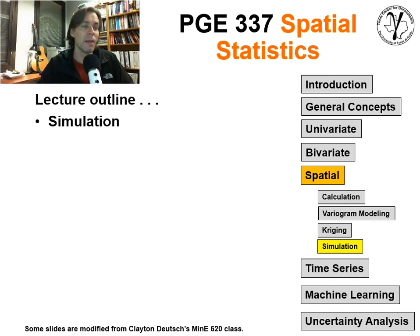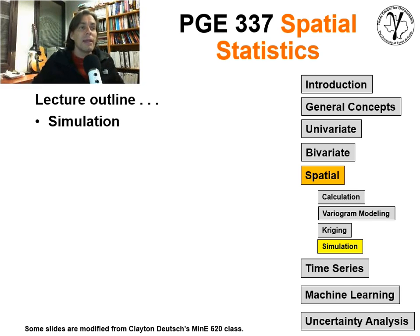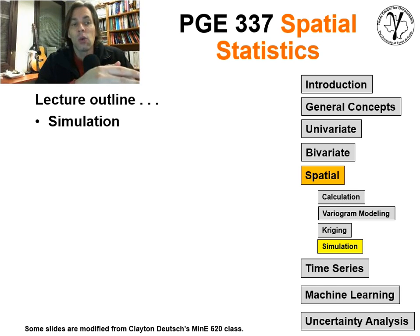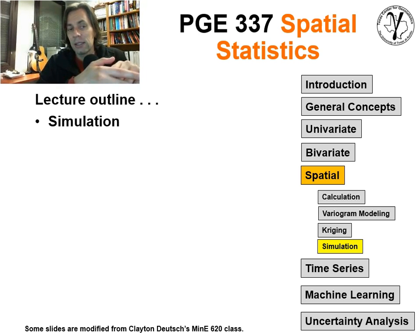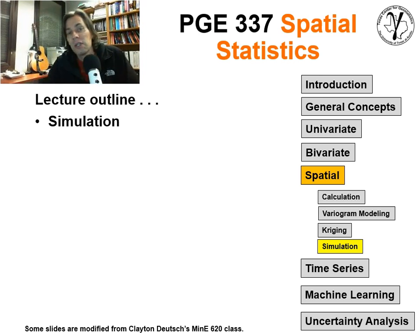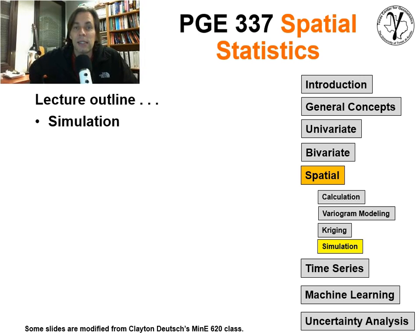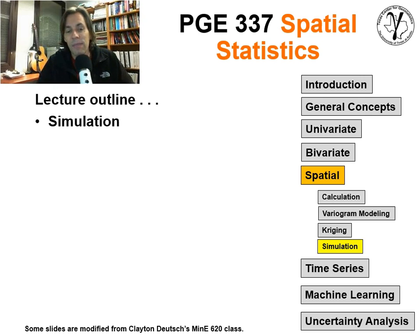That's the end of the lecture on simulation. Now we will get into indicator-based simulation and co-simulation — how to deal with more than one variable at a time. We're going to have a couple more lectures, and then I think we may jump right into some machine learning and uncertainty analysis. I hope that this was helpful to you. I'm a professor at the University of Texas at Austin — look me up. I'm also Geostats Guy on Twitter where I announce things almost daily. Thank you.